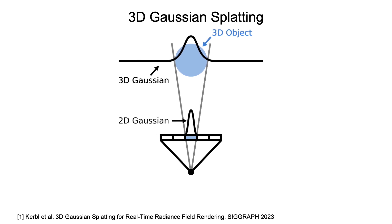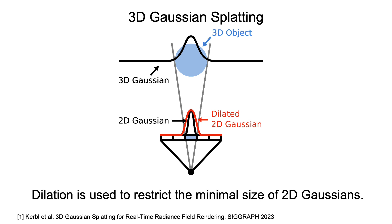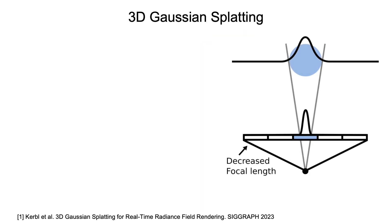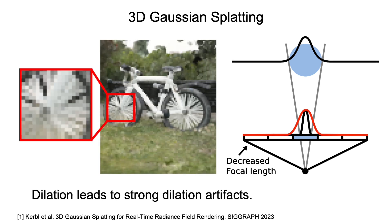To avoid these issues, a dilation operation is applied in 3DGS to restrict the minimal size of 2D Gaussians in the image space. However, this dilation operation results in strong artifacts when changing the sampling rates. When zooming out or decreasing focal length, the projected Gaussians become small, while the dilation enlarges the 2D Gaussian to more than it should be, resulting in dilation artifacts as shown on the left.